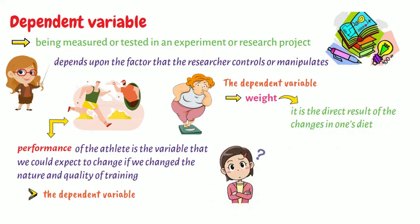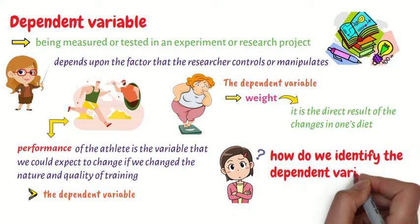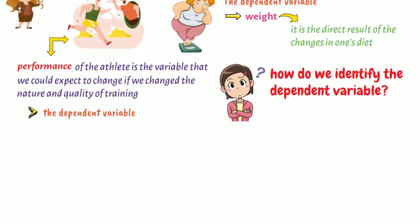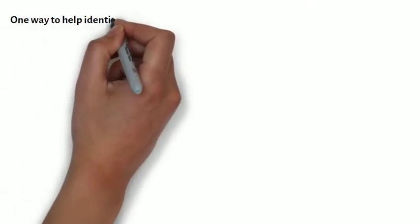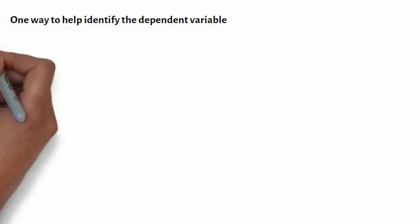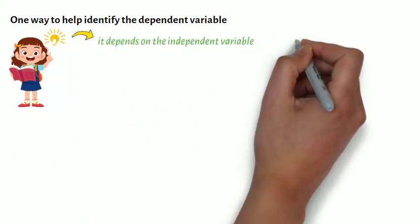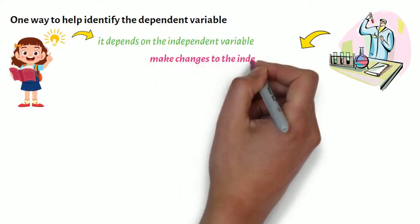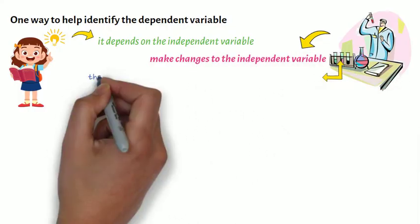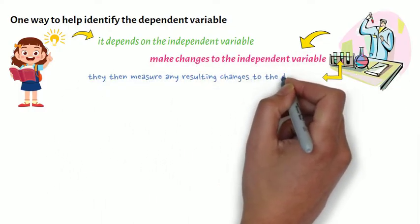Now, how do we identify the dependent variable? This is quite simple. One way to help identify the dependent variable is to remember that it depends on the independent variable. When researchers make changes to the independent variable, they then measure any resulting changes to the dependent variable.